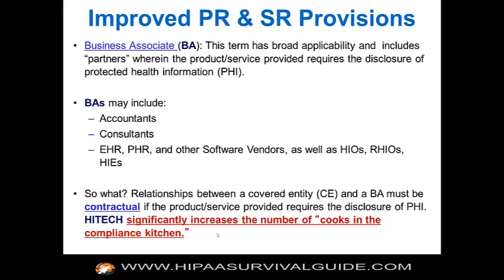The term 'business associate' has broad applicability and includes partners where the product or service provided requires the disclosure of protected health information. This includes accountants, consultants, lawyers, EHR vendors, PHR vendors, software vendors, etc. The relationship between a covered entity and a BA must be contractual via a written contract, and that contract has to conform to certain statutory requirements — if the product or service provided requires the disclosure of PHI. If it doesn't require disclosure of PHI, then that entity is not a BA by definition.